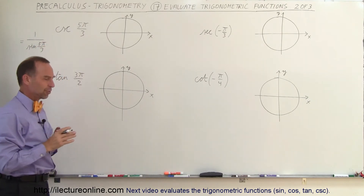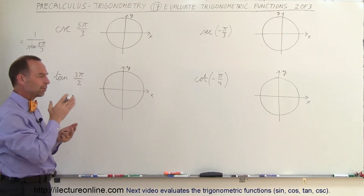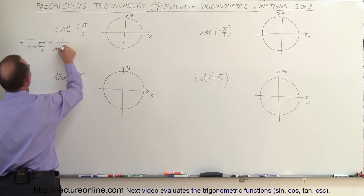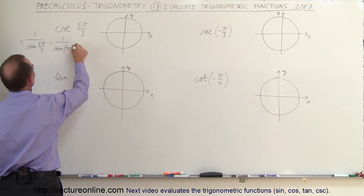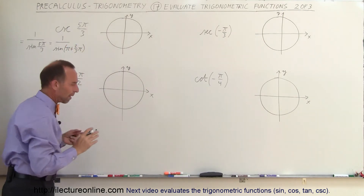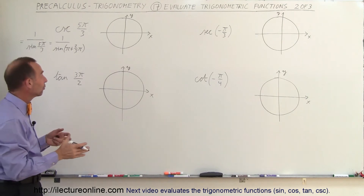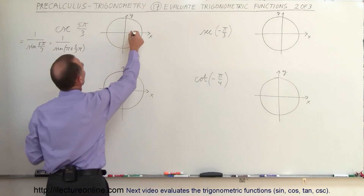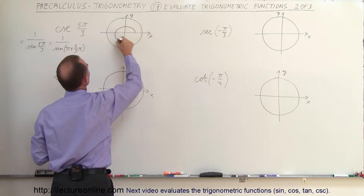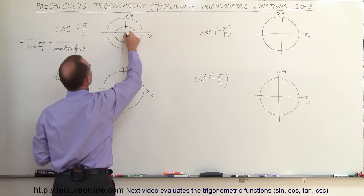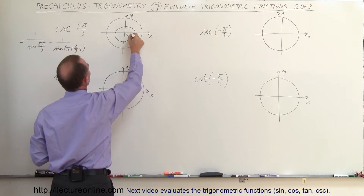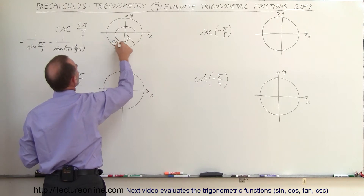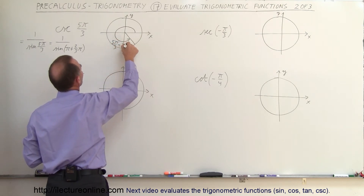Now what is 5π over 3? Well, 5π over 3 would be π plus 2/3 π, so this is equal to 1 over the sine of π plus 2/3 π. Of course 2/3 π would be 120 degrees, add it to 180, that gives us 300 degrees. So this would be an angle of 5π over 3, which is equal to 300 degrees.